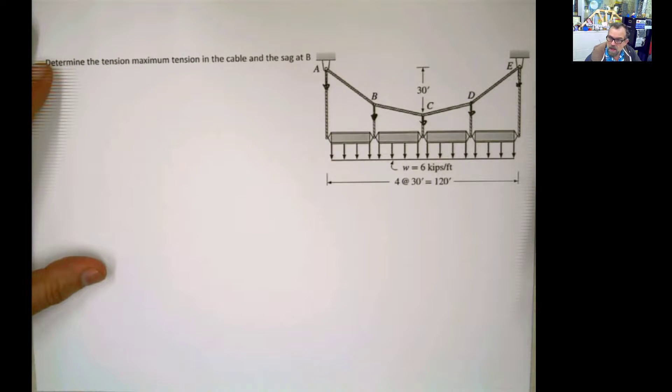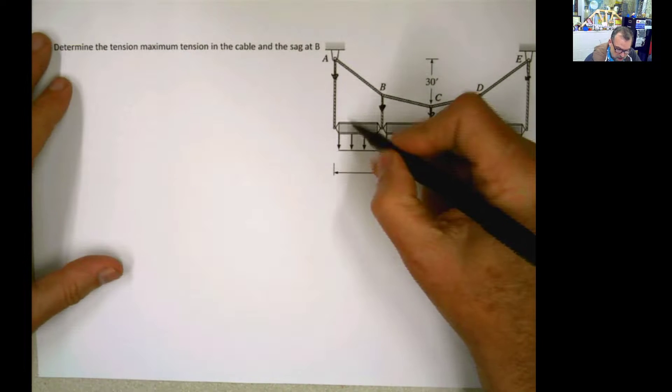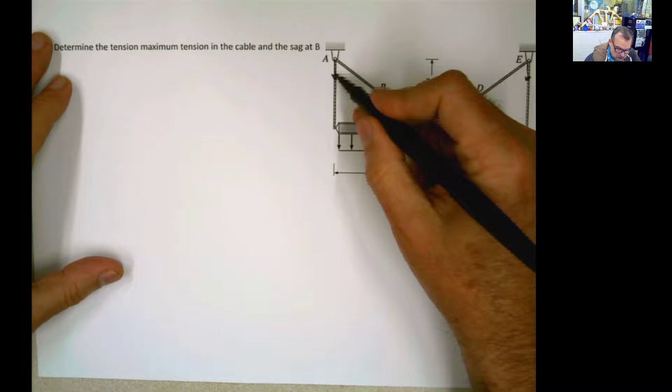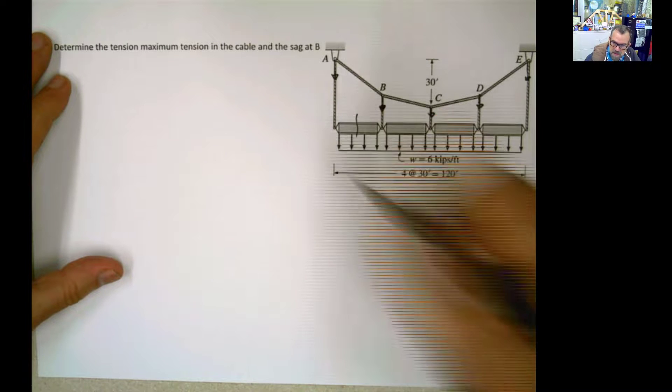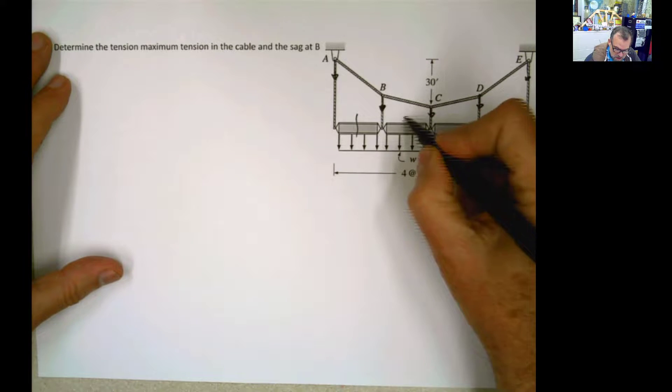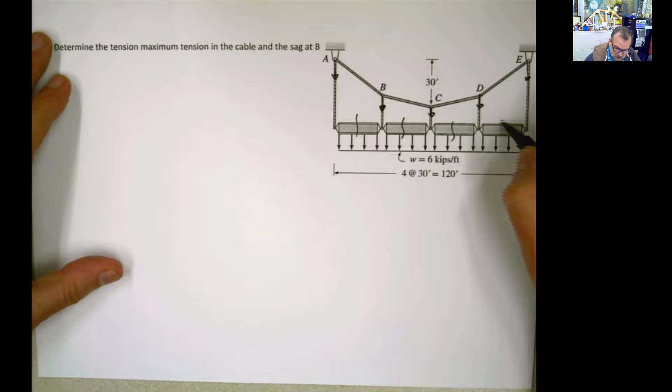Well, we can apply tributary area to this concept. What is a tributary area that is supported, let's say, by this cable? Well, it's half of this distance, half of this mass hanging there. And for this one, this half plus this half, and so on. This half, this half, this half.